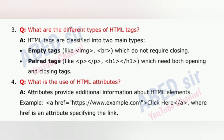Question 3: What are the different types of HTML tags? HTML tags are classified into two main types: empty tags, like IMG and BR, which do not require closing; and paired tags, like P and H1, which need both opening and closing tags.